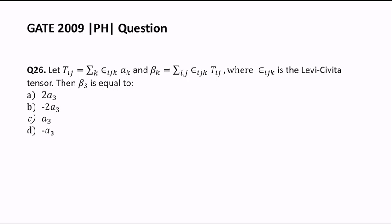Hello everyone. In this video we are going to solve question 26 of GATE 2009 physics paper. The question is related to tensor analysis. We are given t_ij = Σ_k ε_ijk a_k, and β_k = Σ_ij ε_ijk t_ij, where ε_ijk is the Levi-Civita tensor. We need to find the value of β_3 from the given four options.